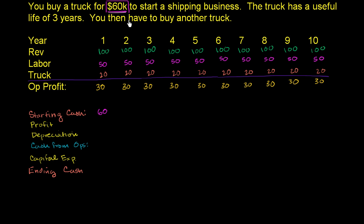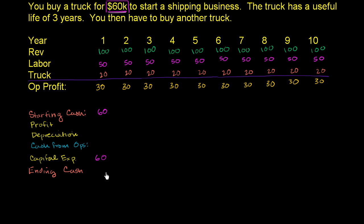On the cash flow statement, you express that by saying I spent $60,000 on capital expenditures — sometimes called property, plant, and equipment. So you would put the $60,000 right over here under capital expenditures. The cash flow statement is really a way of reconciling the profit with the starting and the ending cash.